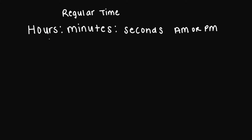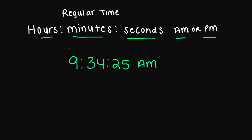So when it comes to writing regular time, you have your hours, your minutes, and then your seconds, and then you have your a.m. or your p.m. So let's look at this regular time. We have 9:34 and 25 seconds a.m. So my hours is 9, minutes is 34, seconds is 25, and then this is a.m.